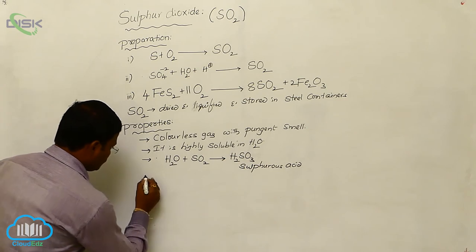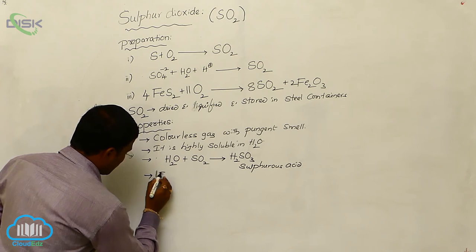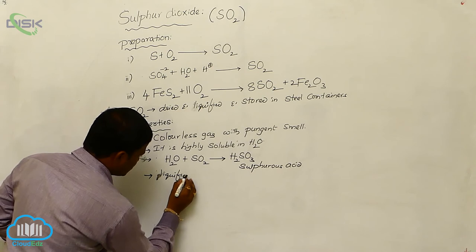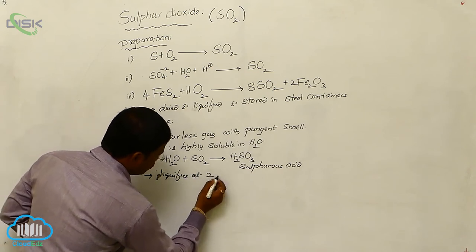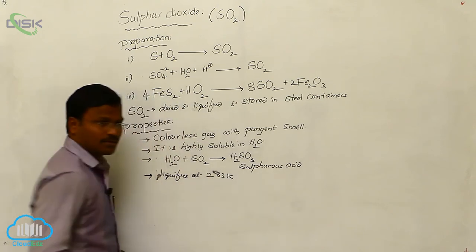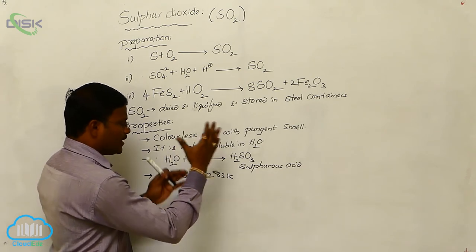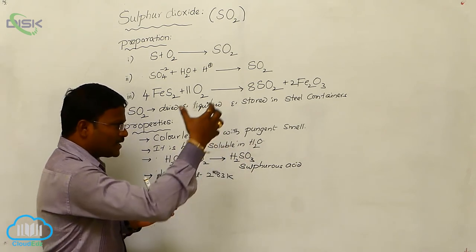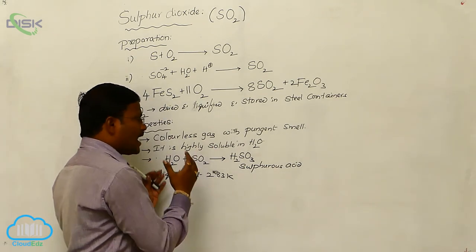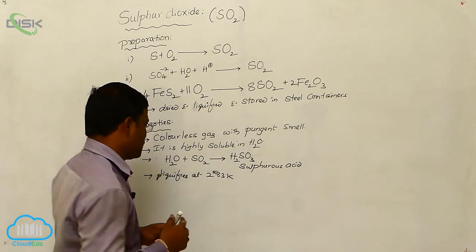Sulfur dioxide freezes or liquefies at 283 Kelvin. It is present in gaseous state at ordinary temperature. When we decrease the temperature and it reaches 283 Kelvin, the gaseous form of sulfur dioxide converts into its liquefied form.